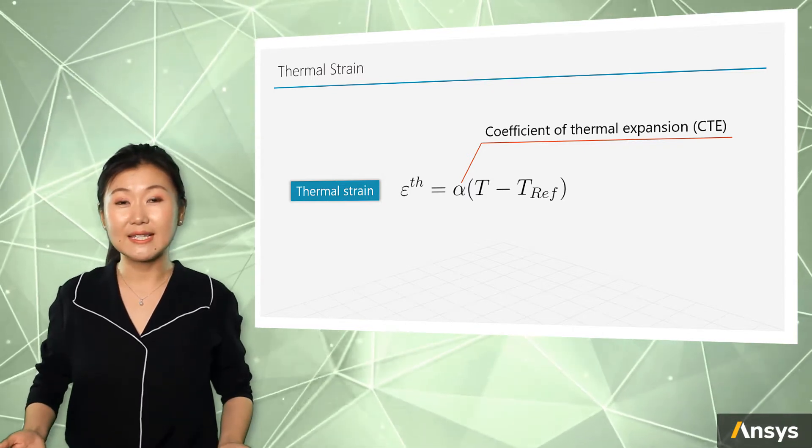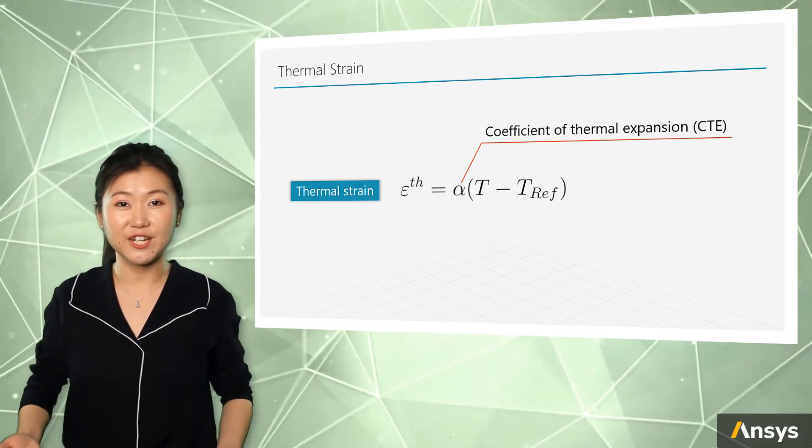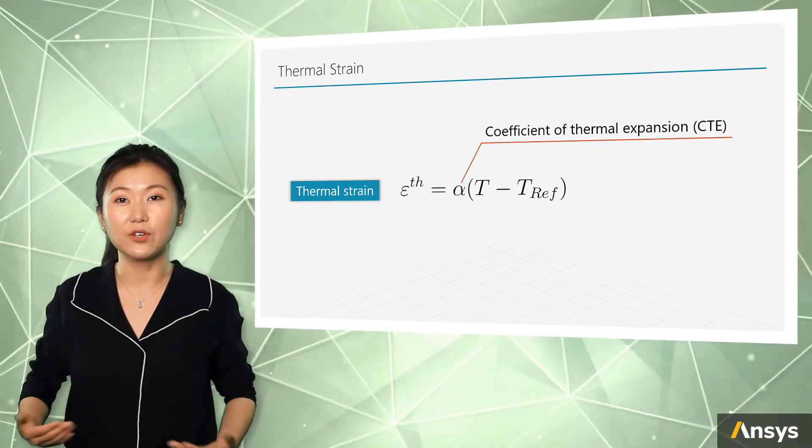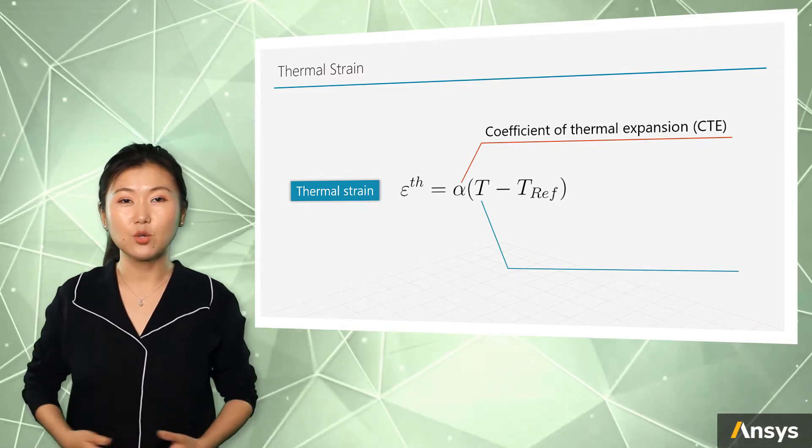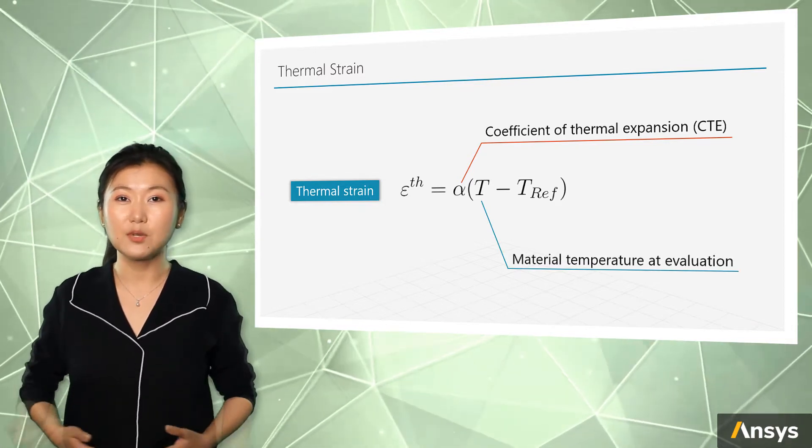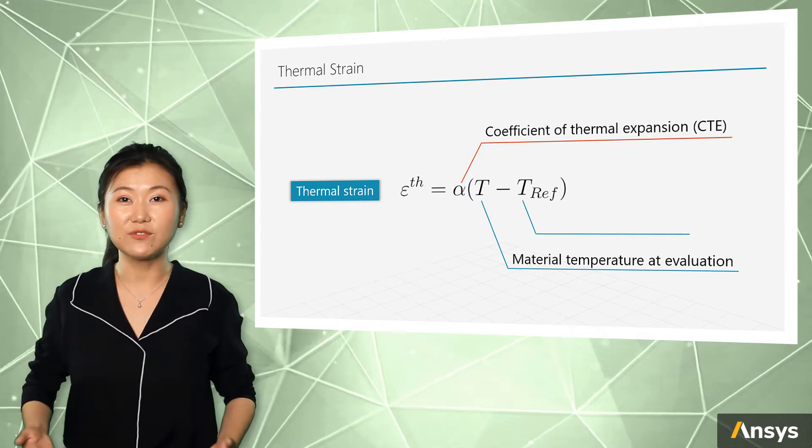Thermal strain is linearly proportional to the temperature change and it is scaled by the coefficient of thermal expansion. Here T minus T reference reports the temperature difference between the current temperature and reference temperature.